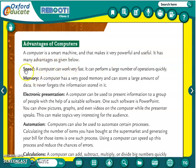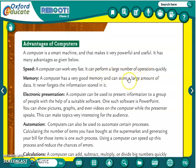First advantage, that is Speed. A computer can work very fast. It can perform a large number of operations quickly. Whatever your job is, it can be done with a lot of speed. And if there are big numbers or a lot of calculations, it can all be done very quickly.